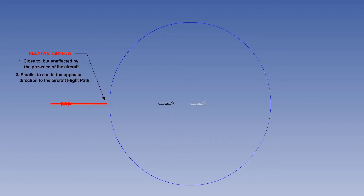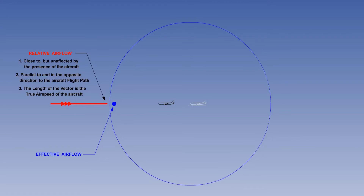For general review, the relative air flow is also parallel to, and in the opposite direction to, the aircraft flight path. The length of the vector represents the true air speed of the aircraft. As soon as the pressure wave passes over an air particle, it is no longer relative air flow — it becomes effective air flow.